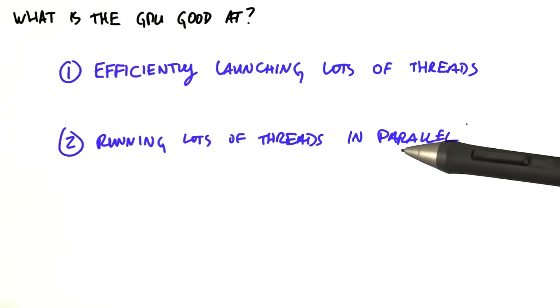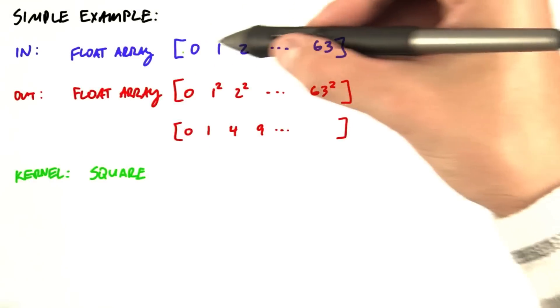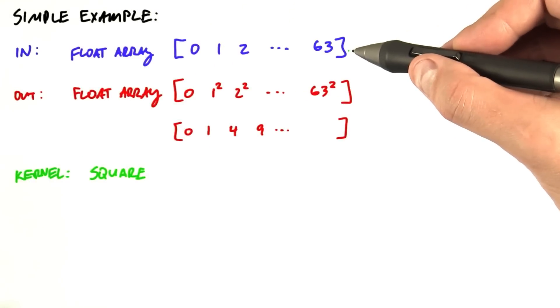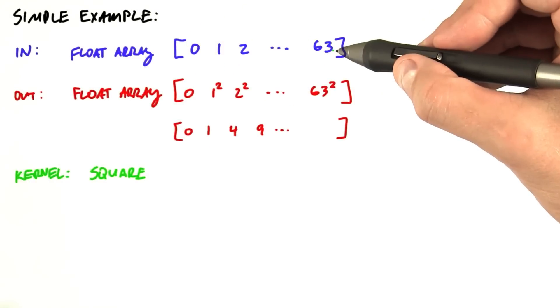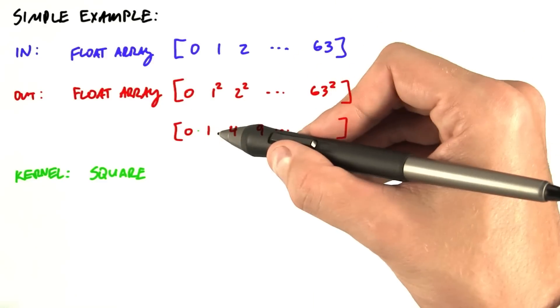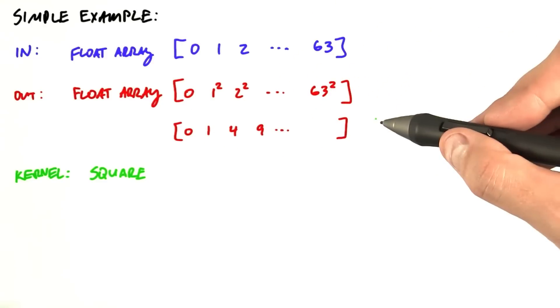Okay, so now we're going to consider a simple example. We're going to take an input array of 64 floating-point numbers numbered 0 to 63, and we're going to square each number in the array. So the output will be 0, 1, 4, 9, and so on.